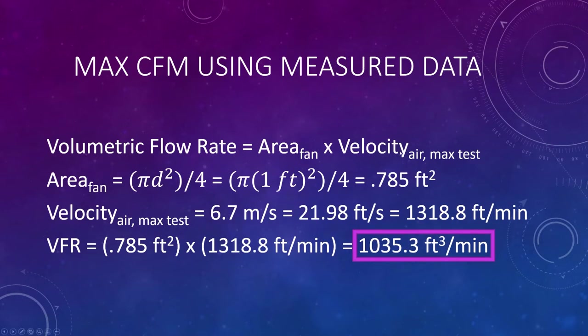So the first one I'm going to go over is the maximum velocity. The equations are all going to be the exact same. The only difference is going to be the velocity that I pop in, which would be 6.7 meters per second. Again, do unit conversion to feet per second and then another unit conversion to feet per minute. And what I ended up getting was a CFM of 1035.3 cubic feet per minute. So this is a little more than half of 1800, which again, that's pretty atrocious.